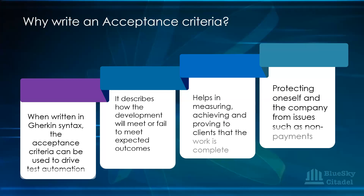Why are we writing acceptance criteria? First, when written in Gherkin syntax, the acceptance criteria can be used to drive test automation. Second, it describes how the development will meet or fail to meet expected outcomes — when you have a list of conditions, if they're not met, you know it's failed; if they are met, development is complete. Third, it helps in measuring, achieving, and proving to clients that the work is complete.